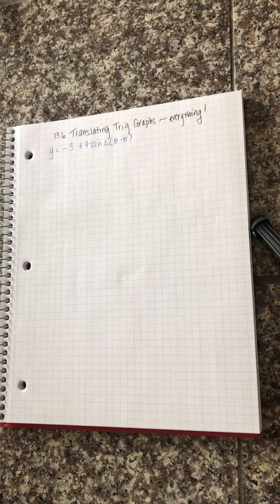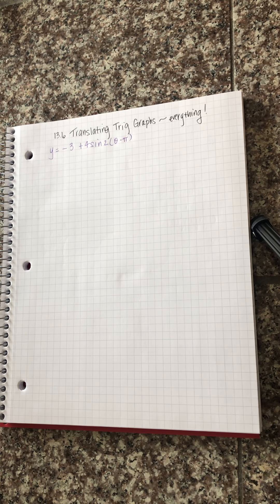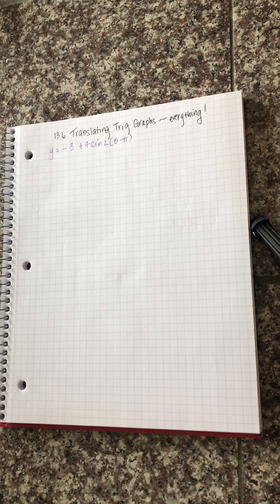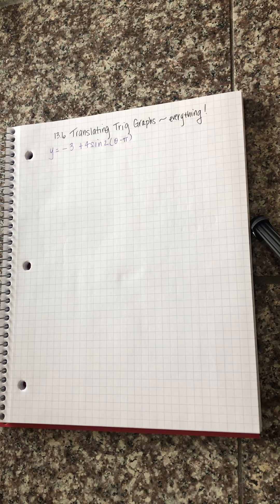Negative three plus four times the sine of two times the quantity theta minus pi. I'm going to go through and label everything. You don't have to but I recommend that you do. If we were in class I would give you a little table and ask you to find the amplitude, period, whatever.